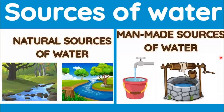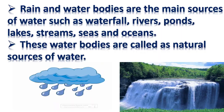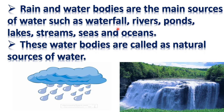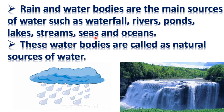Rain and water bodies are the main sources of water, such as waterfalls, rivers, ponds, lakes, streams, seas, and oceans. These water bodies are called natural sources of water.